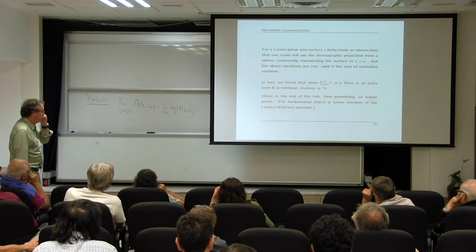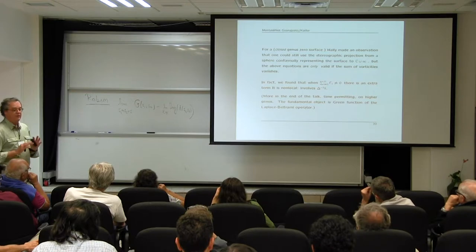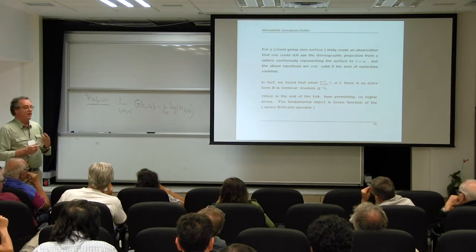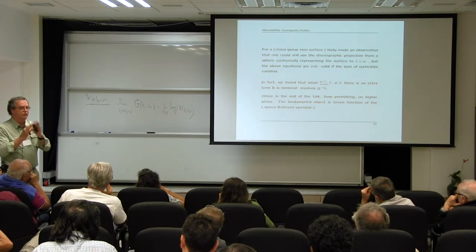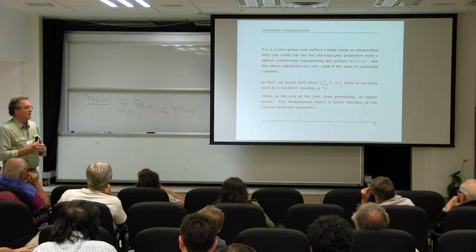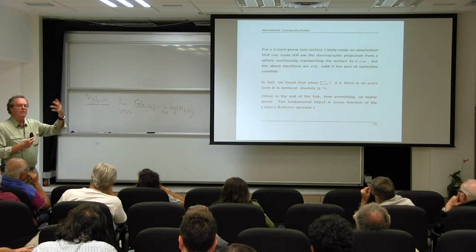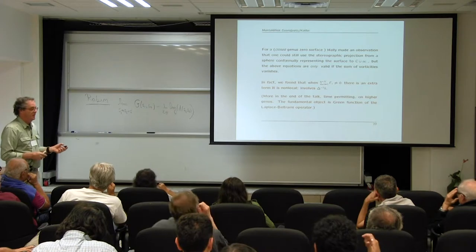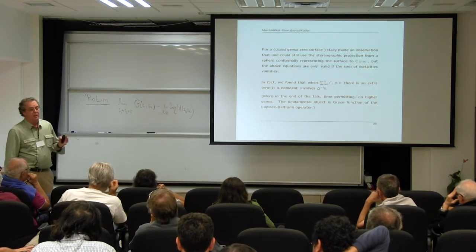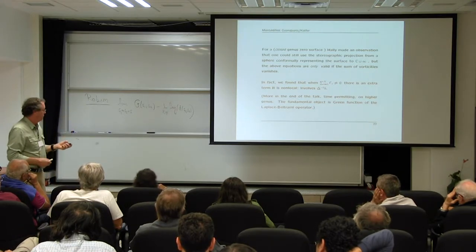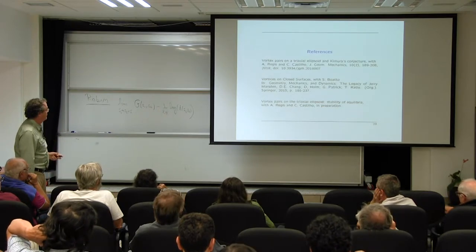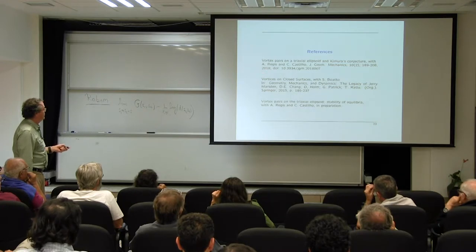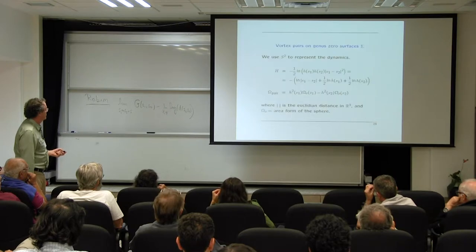In work I did with my colleague Stefanela Boato, we found that there is a non-local term — depending on the whole surface — that must be added when the total vorticity of the vortices is non-zero. Even though the background has uniform vorticity, this uniform vorticity reacts because the sum of the vortices is not zero, giving this extra term. However, in the rest of the talk we're doing pairs of opposite vortices, so the sum vanishes and we're okay.